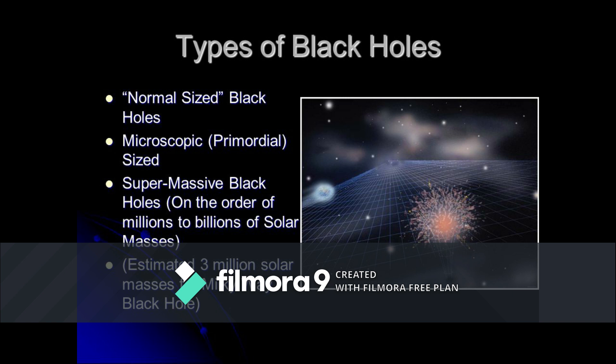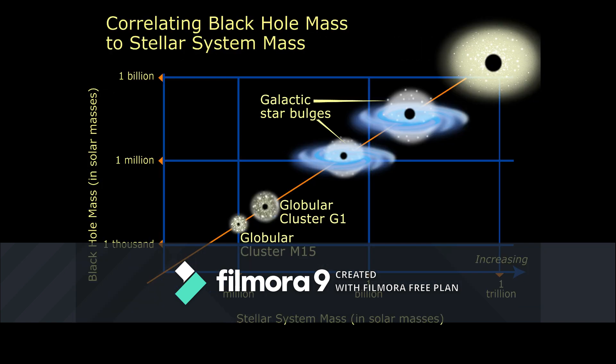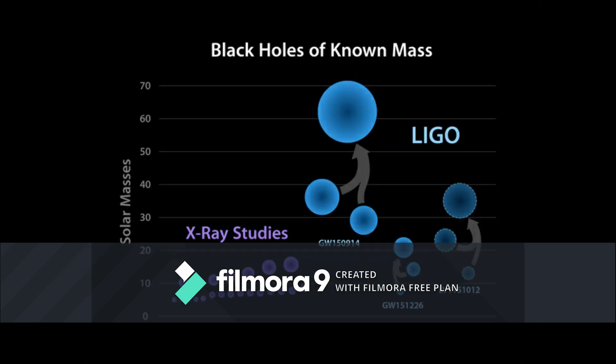The most common type are medium-sized black holes called stellar black holes. The mass of a stellar black hole can be up to 20 times greater than the mass of our Sun. We can assume that the equivalent of 20 suns are packed into a stellar black hole.